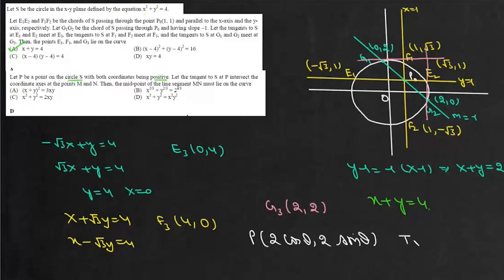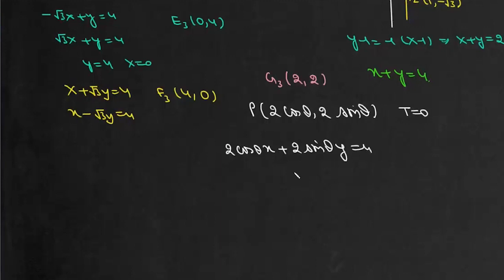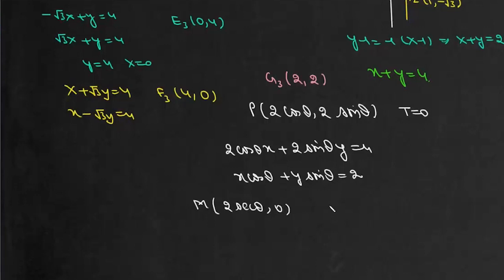The equation of the tangent at P using T = 0 is 2cosθ·x + 2sinθ·y = 4, which simplifies to x·cosθ + y·sinθ = 2. This tangent intersects the x-axis at M = (2secθ, 0) and the y-axis at N = (0, 2cosecθ).